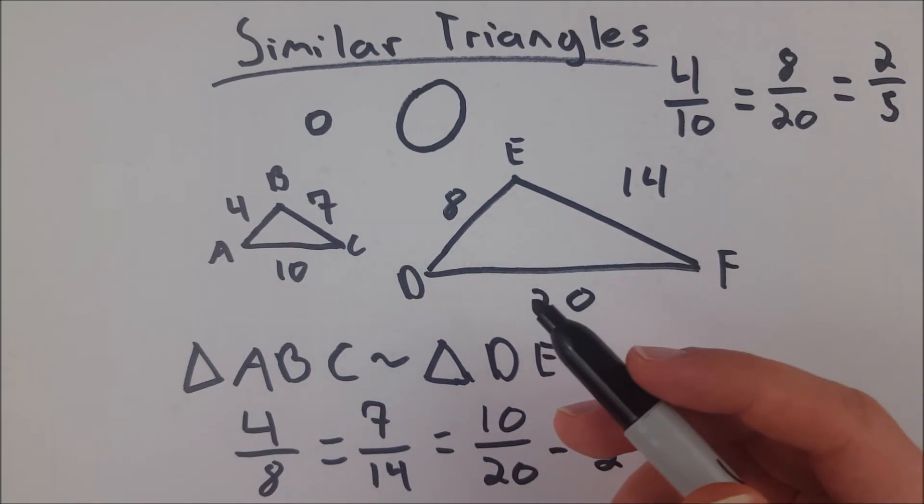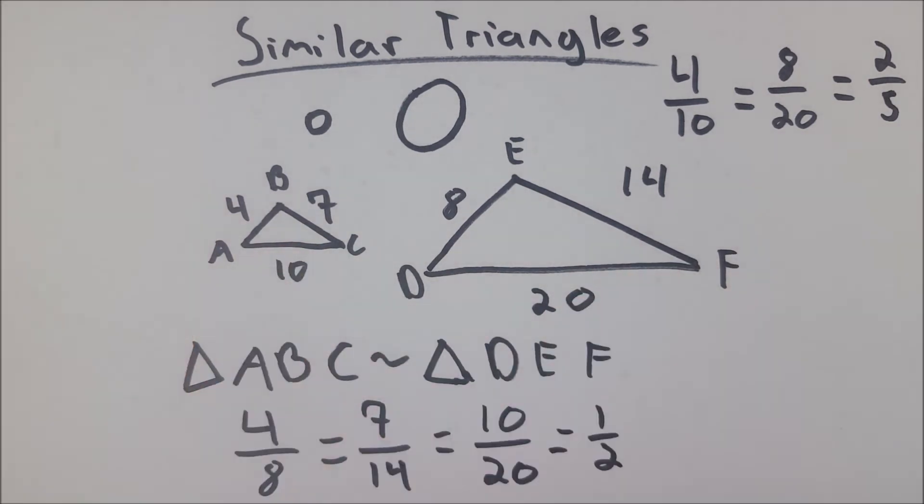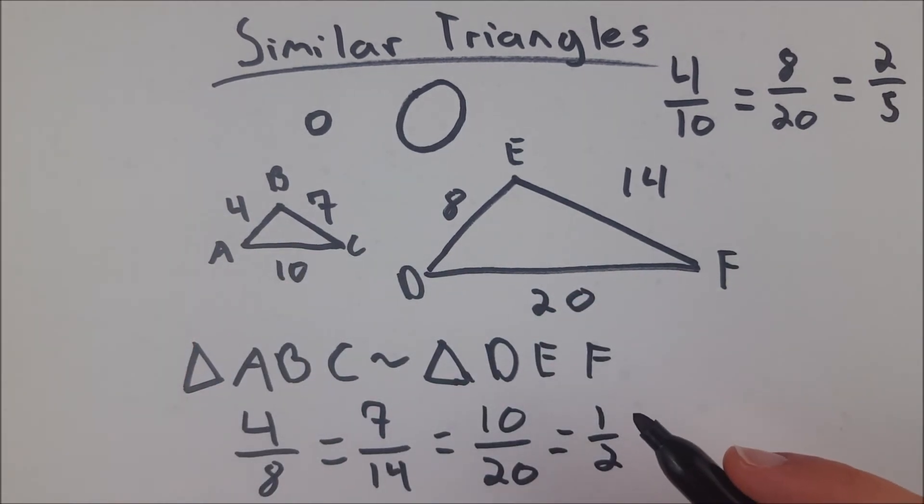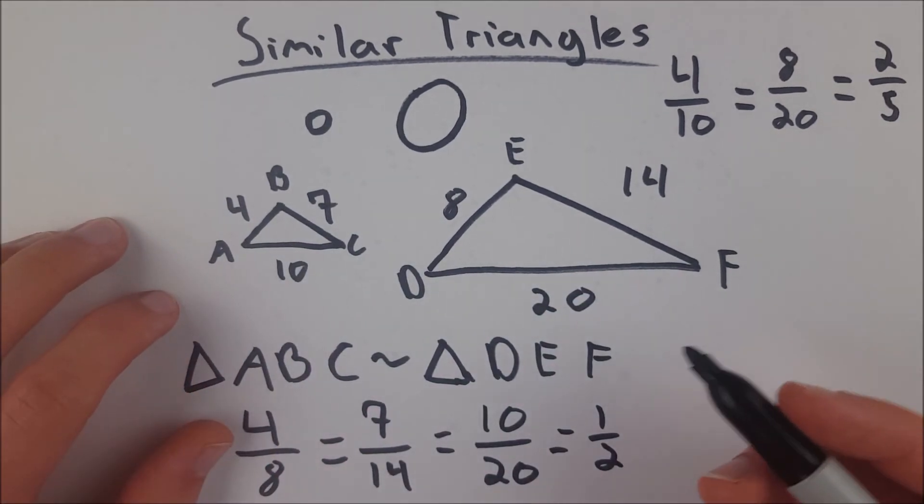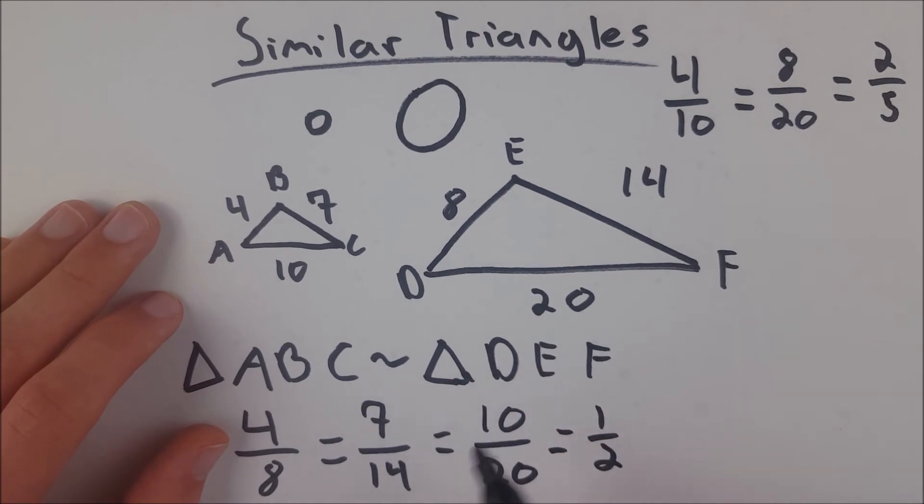It's a property of similar triangles, which, like I said, are like different sized versions of the same triangle. One more thing I want to mention about similar triangles is that they have congruent angles.